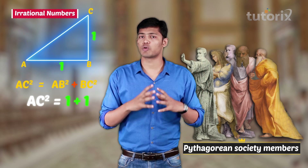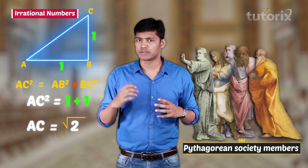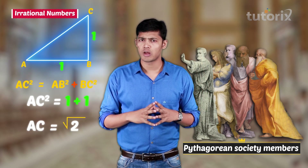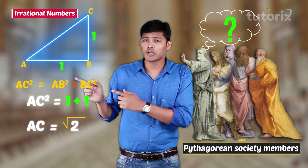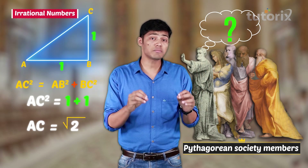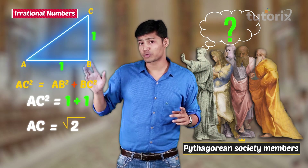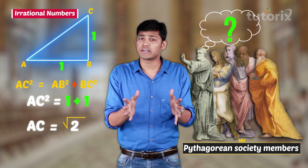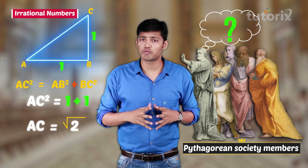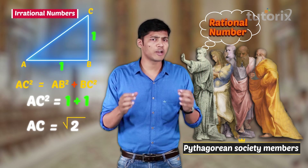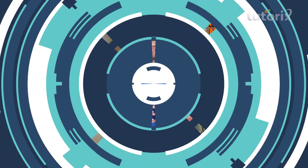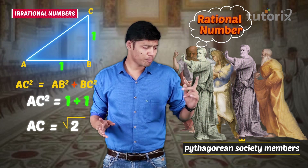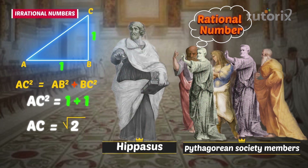The hypotenuse came out to be square root of two units. For all of them, it was quite a new number. For some time, they thought this number — square root of two — can be represented in p by q form, so they considered it to be a rational number. Later, Hippasus, a member of the Pythagorean society, proved that square root of two cannot be represented in p by q form.